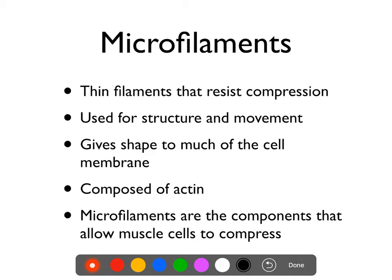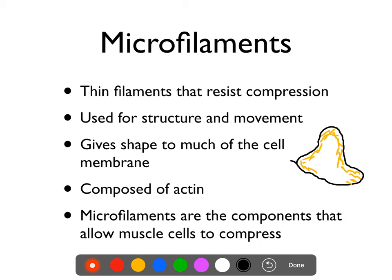Microfilaments are very thin — the thinnest of the cytoskeletal components. They also resist compression fairly well but are weak against stretching. They are used for structure, particularly along the outside of a cell. In an amoeba, the shape of the cell membrane is made by a network of microfilaments that brace against the edge, and these microfilaments can push against each other to extend a pseudopod outwards — that's how they're used in movement.